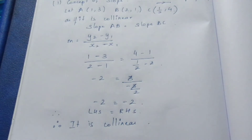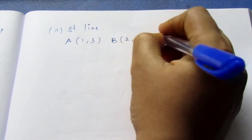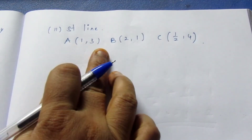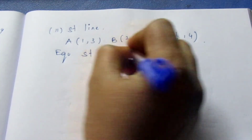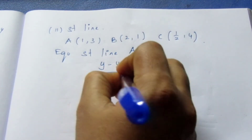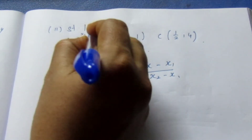The second method uses the straight line equation. We have A = (1,3), B = (2,1), C = (1/2, 4). We write the equation of line AB using the two-point form: (y − y1)/(y2 − y1) = (x − x1)/(x2 − x1), substituting x1=1, y1=3, x2=2, y2=1.